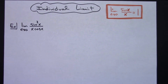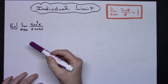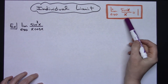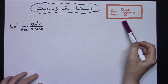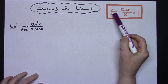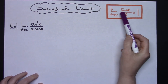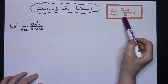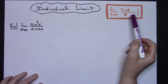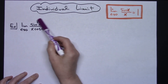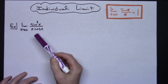In this video I'm going to work out an individual limit. It's going to be a trig limit, and so we're going to want to recall that we do know that the limit as x approaches 0 of sine x over x is equal to 1. We will be using that fact to manipulate and work out this limit.